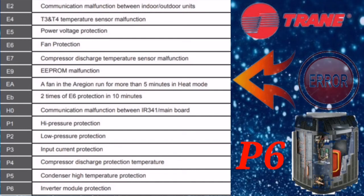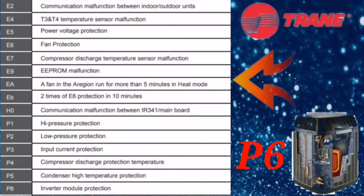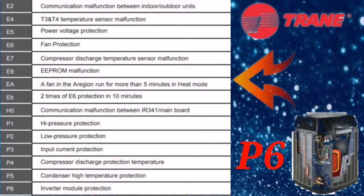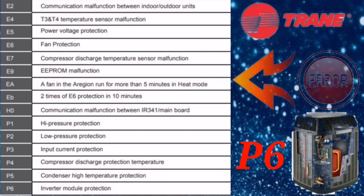The next error code is P6, which means inverter module protection. In 12,000 and 18,000 BTU units, the main PCB, rectifier, and inverter module are all combined on one PCB — change the outdoor PCB and your unit will be in working condition. For 24,000 BTU and above, there is a separate main PCB and inverter module — in that case, change the inverter module specifically and your unit will be in working condition.